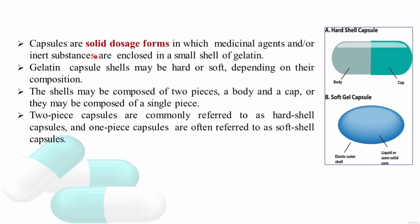What are capsules? Capsules are solid dosage forms in which medicinal agents, with or without inert substances, are enclosed in a small shell of gelatin. We can consider a capsule as a container in which the medicinal agent or API with or without excipients are enclosed. Gelatin shells may be hard or soft depending on their composition. The shells may be composed of two pieces — a body and a cap — or they may be a single piece.